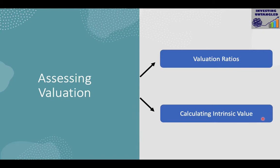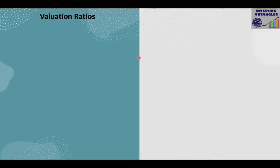Buying stocks is no different than regular shopping — we always want to buy great stuff at a bargain price. In stocks, that 30% discount is called a margin of safety. If we are wrong somewhere in our analysis, we at least have a price cushion that will cut our losses. This reminds me of a famous saying from the book The Dhandho Investor by Mohnish Pabrai: 'Heads I win, tails I don't lose much.' That is stock investing 101.